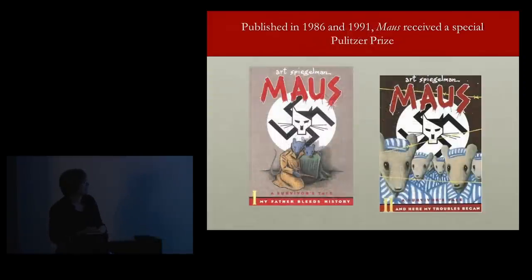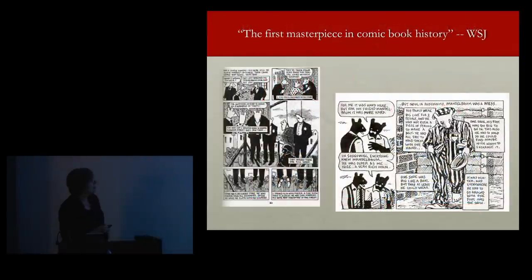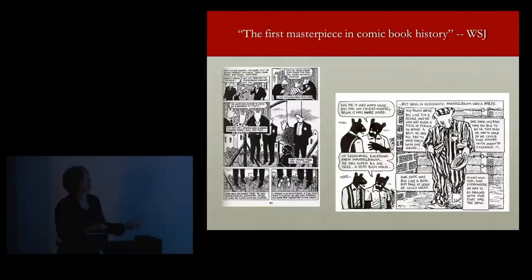Then of course he came up with Maus, which was 13 years in the making. It was published in two installments because Art Spiegelman was worried about trademark infringement — Steven Spielberg was bringing out the film An American Tail about Fievel the mouse, and he was afraid of being accused of copyright infringement. So he brought his out first, and the second volume came out five years later. The Wall Street Journal called it the first masterpiece in comic book history, and certainly its impact was completely unprecedented for a graphic work.